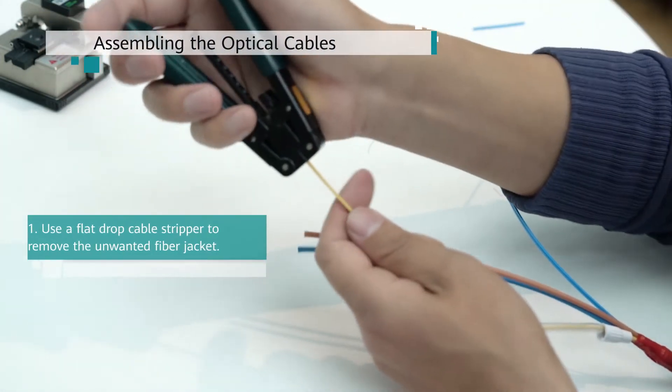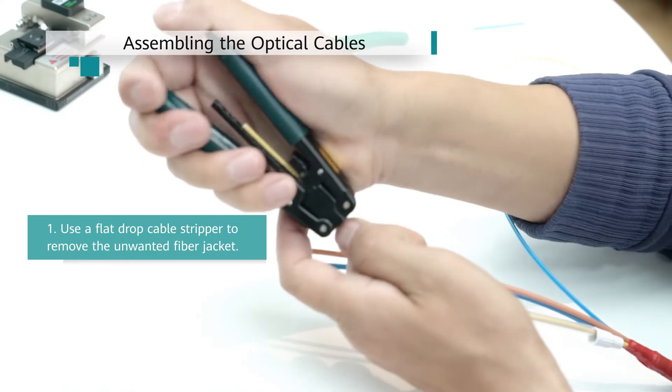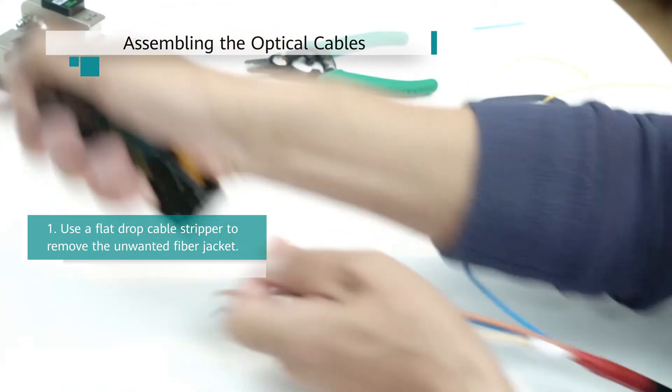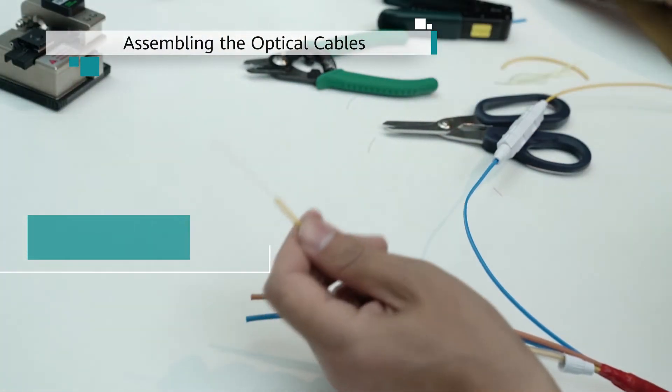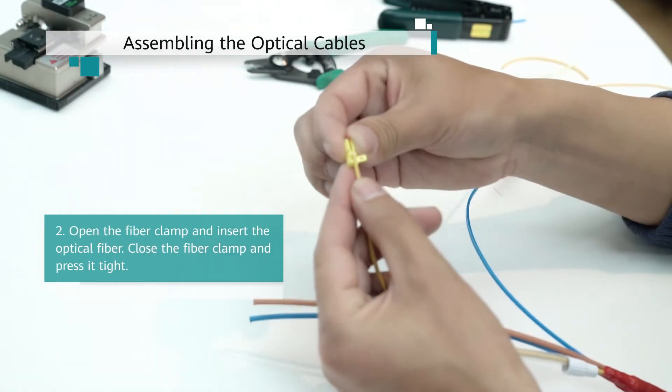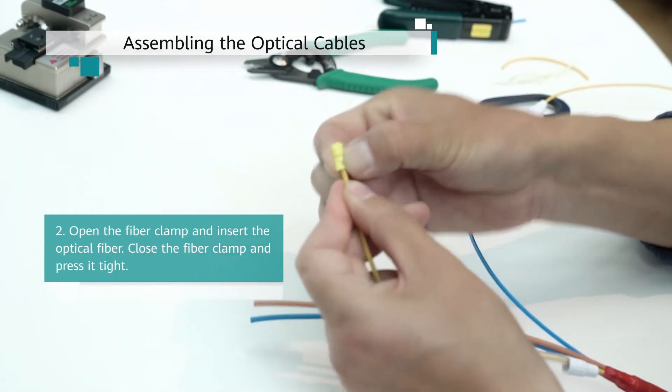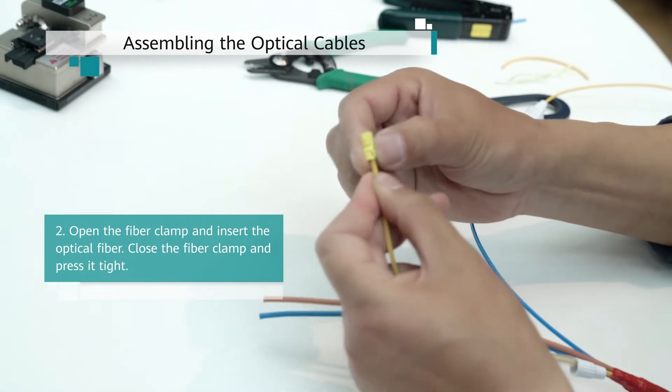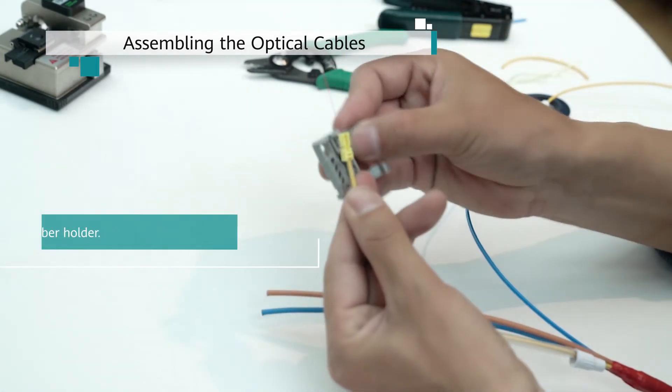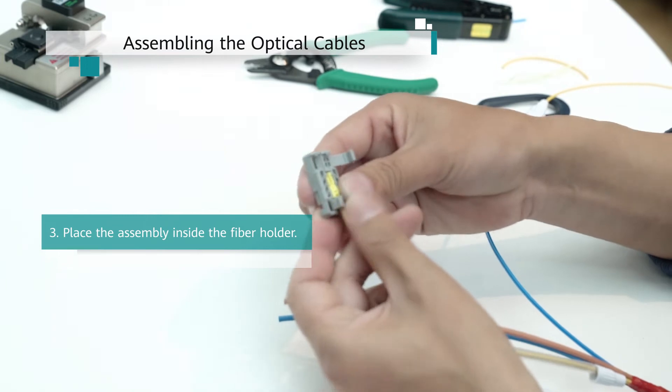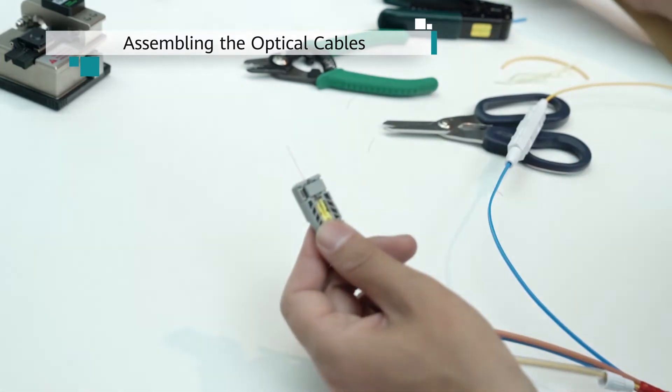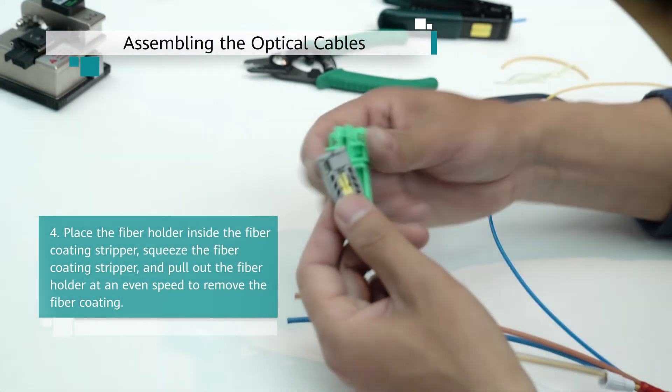Then, remove the fiber coating and clean the bare fiber. You need to purchase the 02233 FKY auxiliary material package which contains the required tools such as the fiber holder, fiber coating stripper, and fiber clamp. You can also use Miller pliers instead of purchasing this package.